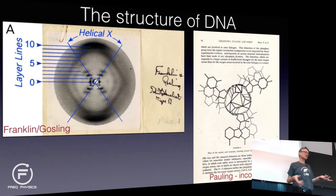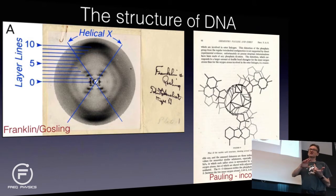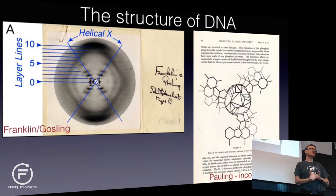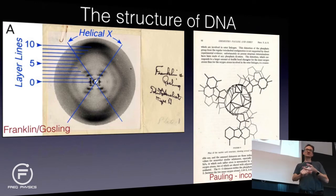There are really only two possible answers: your model could be incompatible with the data, or it can be compatible with the data. It's impossible to say that the data proves your model is right. And a lot of very famous people worked on this.